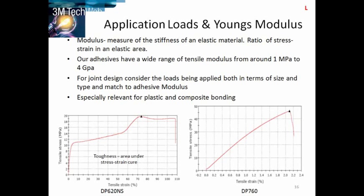Modulus is a measure of the stiffness of an elastic material — the ratio of stress to strain in the elastic area. We have a wide range of adhesives. For your joint design, the loads being applied both in terms of size and type ideally need to be matched to these moduli. This is especially relevant for plastic and composite bonding where some energy absorption may be required.